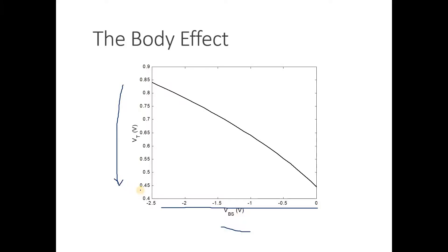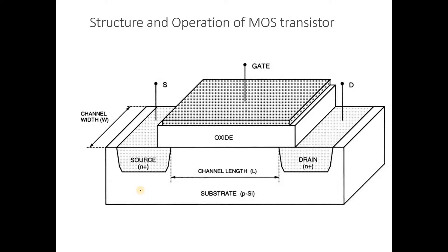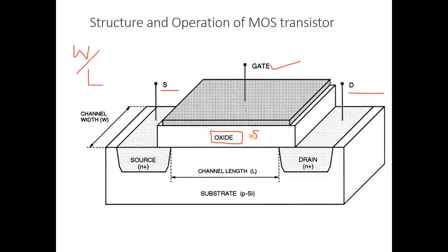Now we will discuss the MOSFET's operation. The structure has length L and width W of the channel. The source, drain, gate, and oxide (SiO2) are the main components. While these days hafnium and other high-k oxides are used, for this simplest structure we will consider SiO2. The gate sits above the oxide.